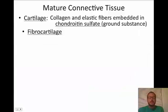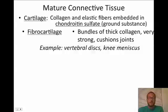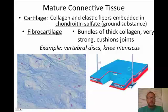Another type of cartilage is fibrocartilage. By its name, you can guess it has bundles of thick collagen — it's very strong and used to cushion joints. Examples include your vertebral discs, which are shock absorbers between each vertebra, and also the meniscus of your knee. On a slide it stains blue with red nuclei and big thick blue collagen fibers. A pole vault pad is a good analogy — it cushions impact.